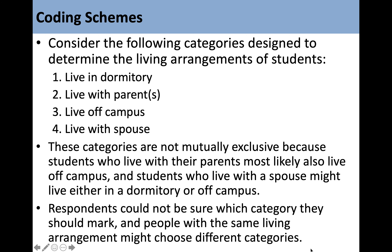Consider the following categories designed to determine the living arrangements of students: live in dormitory, live with parents, live off campus, live with spouse. These categories are not mutually exclusive because students who live with their parents most likely also live off campus, and students who live with a spouse might live either in a dormitory or off campus. Respondents could not be sure which category they should mark, and people with the same living arrangement might choose different categories.